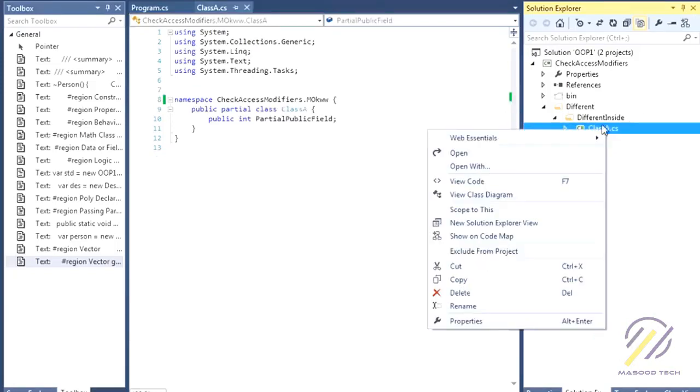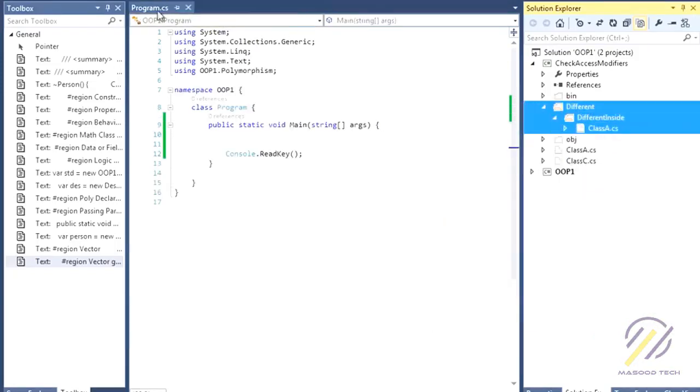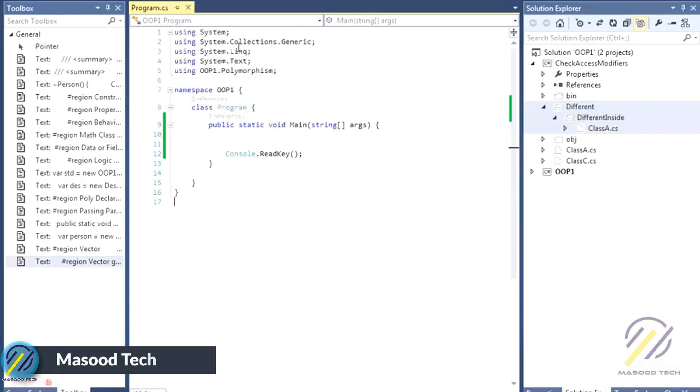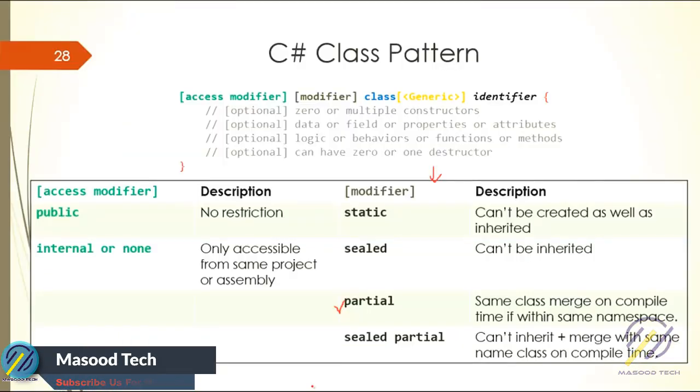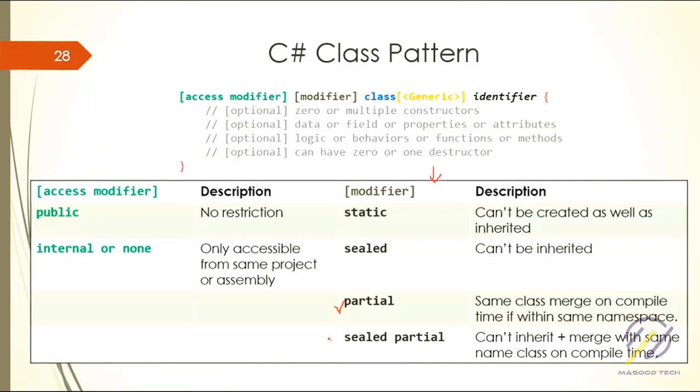You can also have sealed partial. Sealed partial means you cannot inherit it and it will be merged at compile time if the namespaces are same.